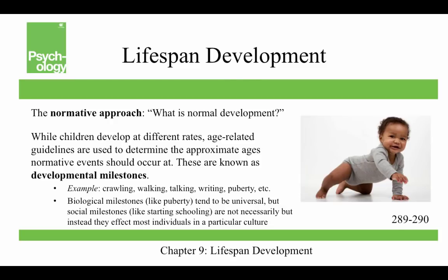The normative approach asks the question: what is normal development? While children develop at different rates, age-related guidelines are used to determine the approximate ages where things should occur — these are developmental milestones, like crawling, walking, talking, writing, and puberty. Biological milestones like puberty tend to be universal, but social milestones like when you start school are not necessarily universal and are affected by culture.